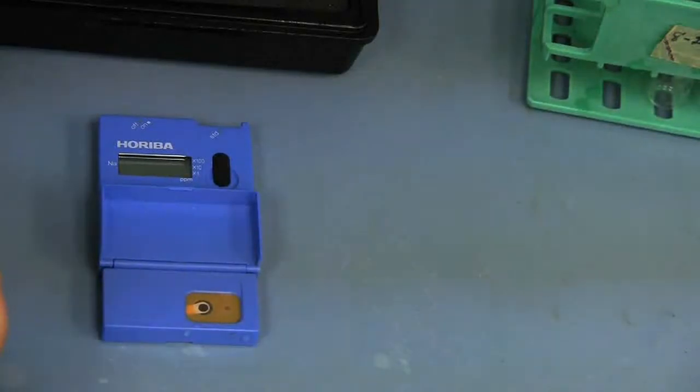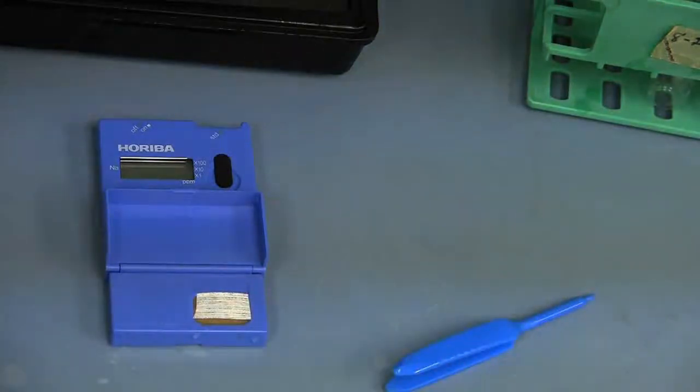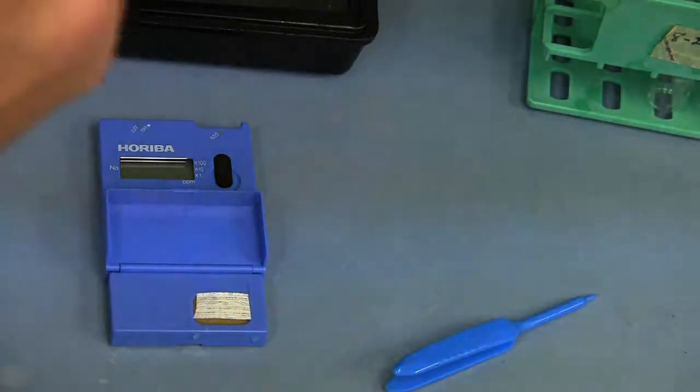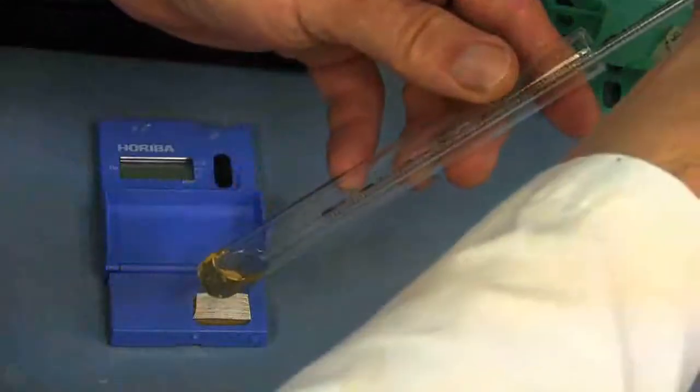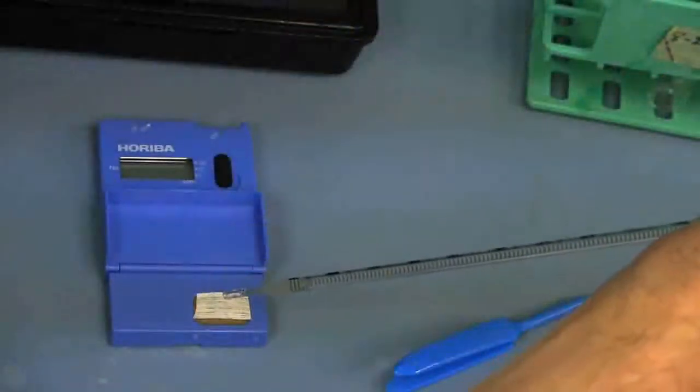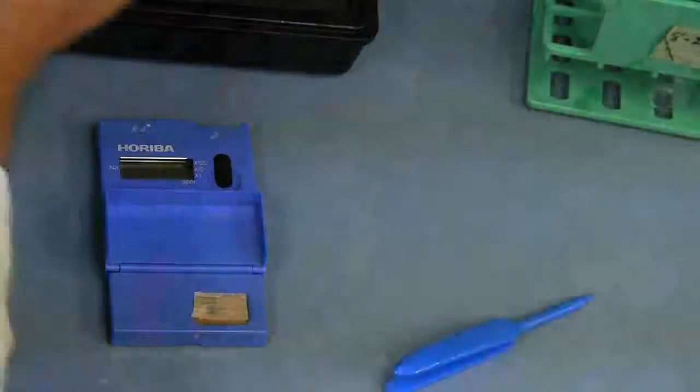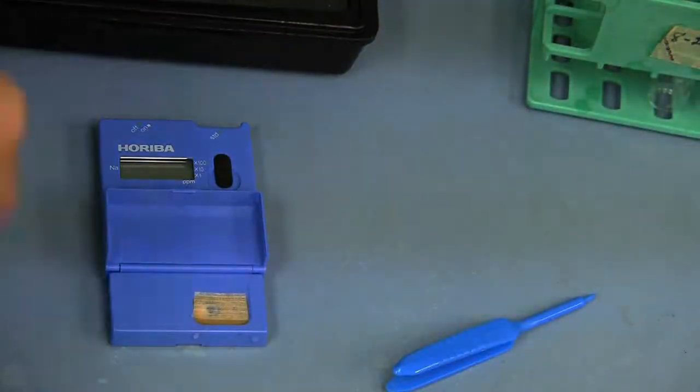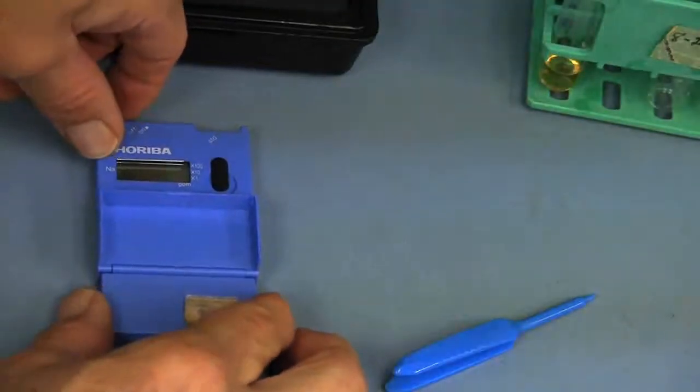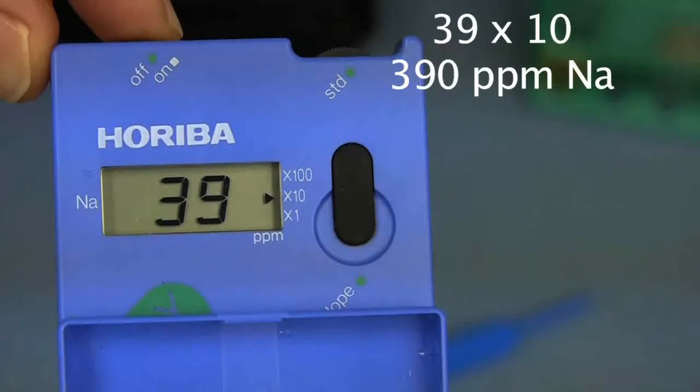So we use the sodium meter just as we did in the calibration practice. You just have to put a sample paper strip onto the probe and then transfer a small portion of solution onto the meter, and then we'll read directly the sodium parts per million that is in that saturated paste extract. Let's turn on the meter and it shows 39 times 10, so 390 parts per million with the saturated paste extract. We had 360 parts per million with the direct reading from the sample.